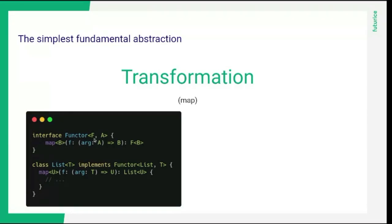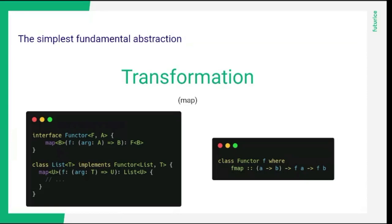You have a general interface that takes some container type — let's call it context F and content A. Then you can map over it: you get a function from A to B and return a container that contains Bs. For example, for a list that contains some Ts, we can implement this functor with list and T: map from T to U and return a list of U. In Haskell, this looks a bit cleaner. F here is the same F as there — in the example this would be list — and we take a function from A to B, an F of A, and return an F of B. We are mapping this function over the context.